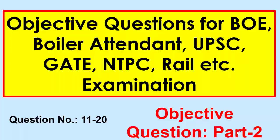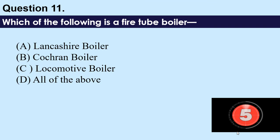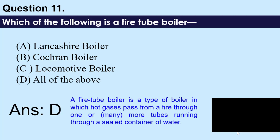Hello friends, myself Devas, a thermal power professional. I will now discuss objective question number 11: Which of the following is a fire tube boiler? A) Lancashire boiler, B) Cochrane boiler, C) Locomotive boiler, D) All of the above. You have five seconds to think. The answer is D — all of the above.